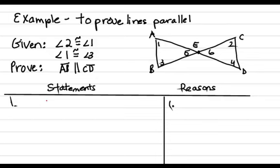We are going to solve a proof in order to prove lines parallel. In this proof we are given that angle 2 is congruent to angle 1, angle 1 is congruent to angle 3, and we need to prove that AB and CD will end up being parallel.